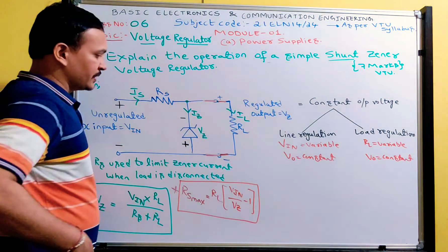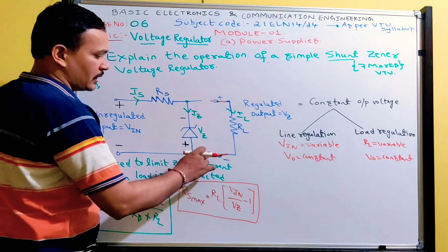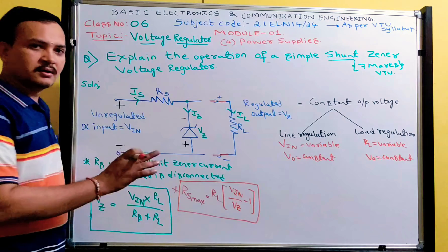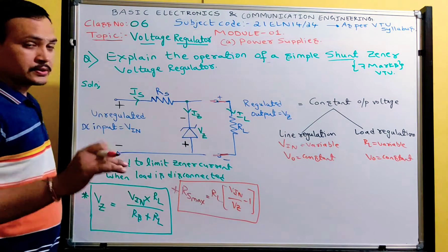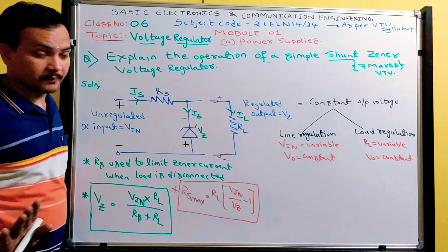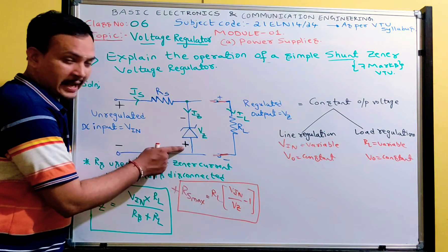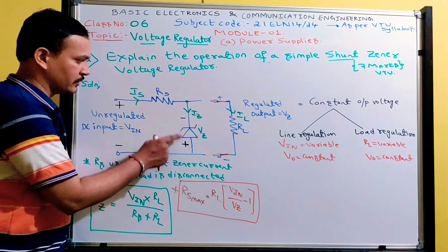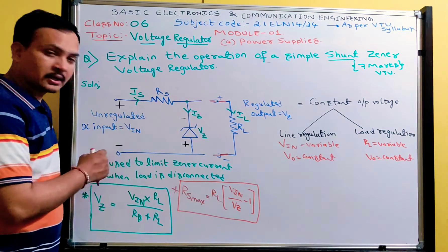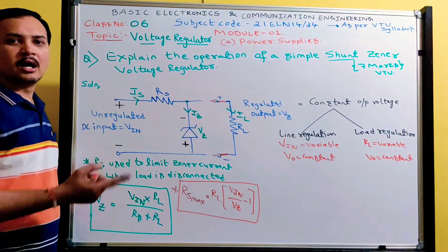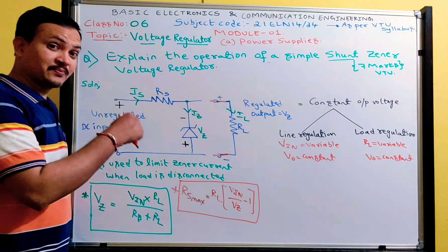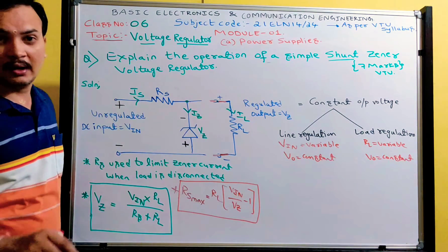Now let's consider the condition when the load is not connected — only RS and the zener diode are present. Keep in mind: connect the zener diode in reverse bias condition. The cathode is connected to the negative terminal and the anode to the positive terminal — opposite polarity — hence it is reverse bias. Only in reverse bias condition does it act like a voltage regulator.